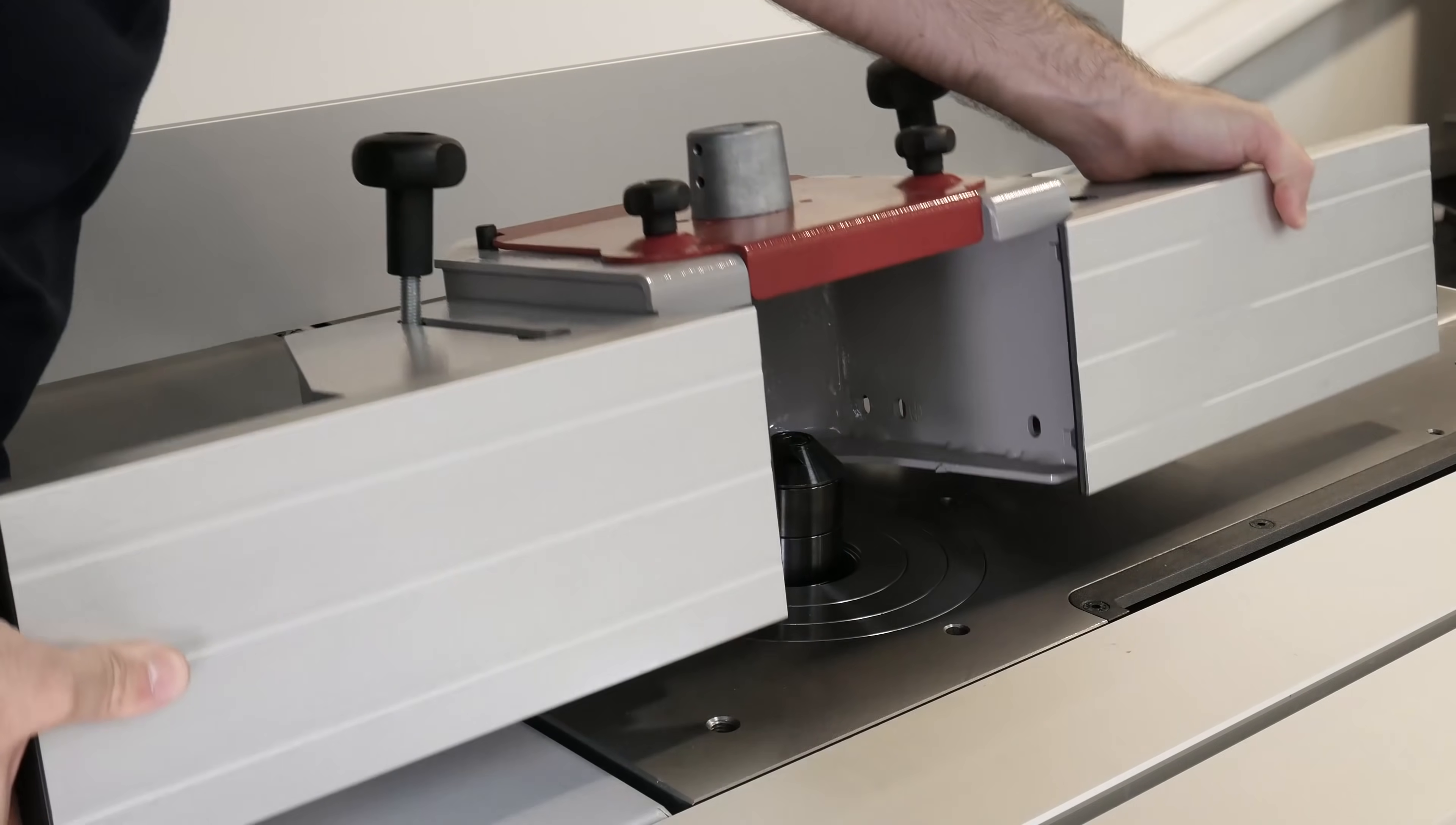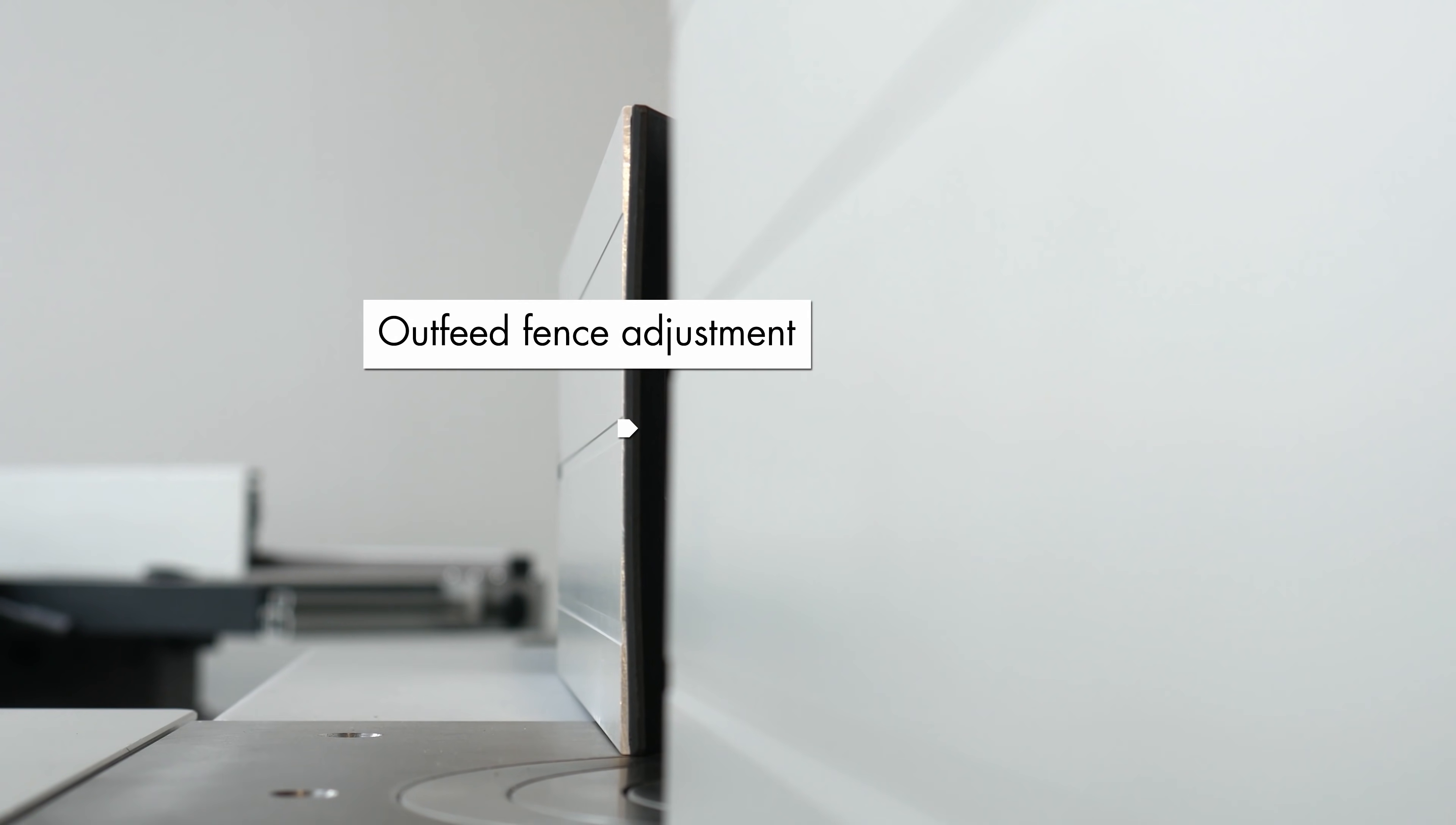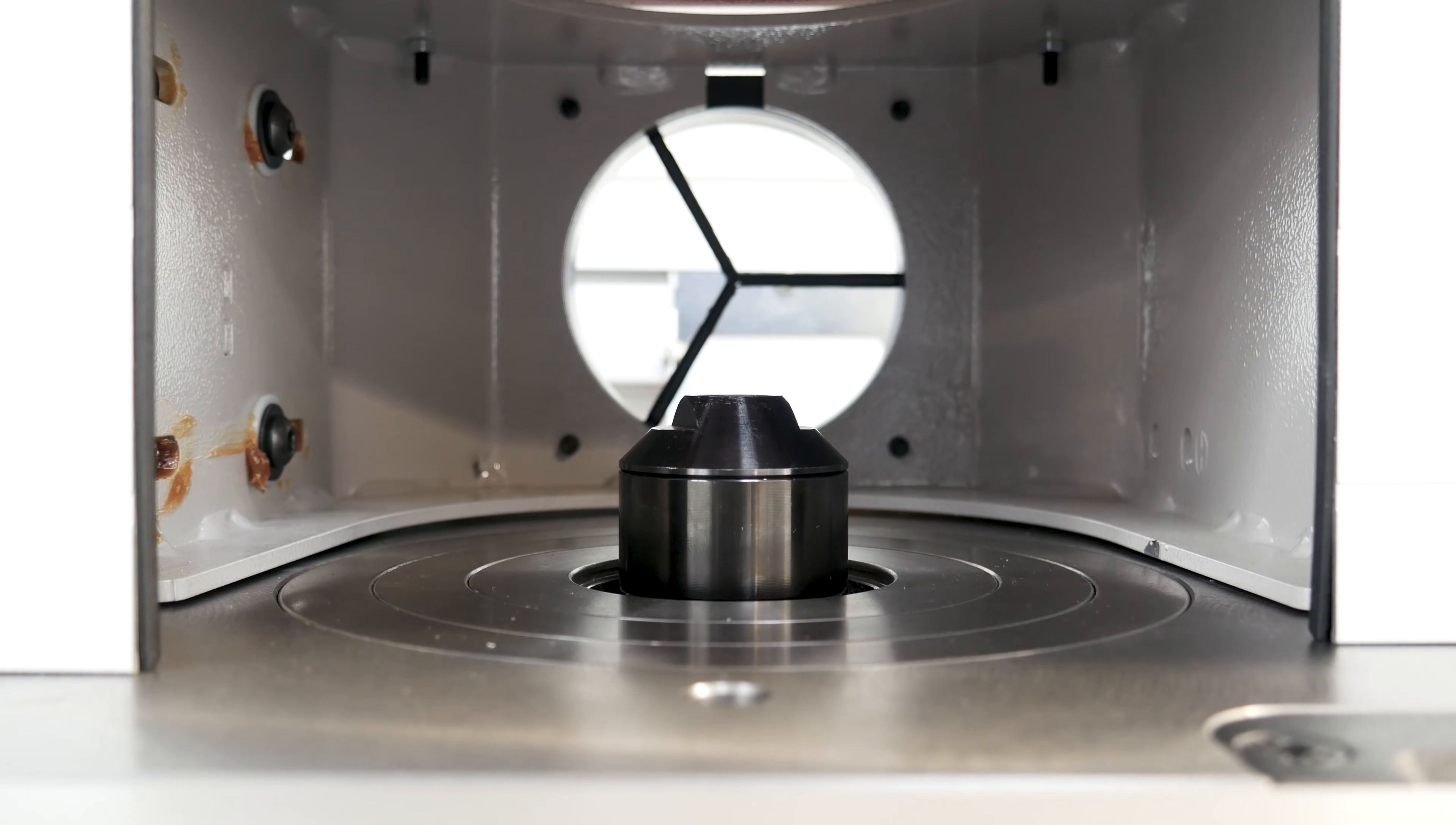Optionally, the multi-adjustment system also features pin locating of the fence with measurement scales. Adjustment of the outfeed fence is between minus 5 and 25mm and efficient dust extraction with a 120mm port ensures your workspace remains dust free.